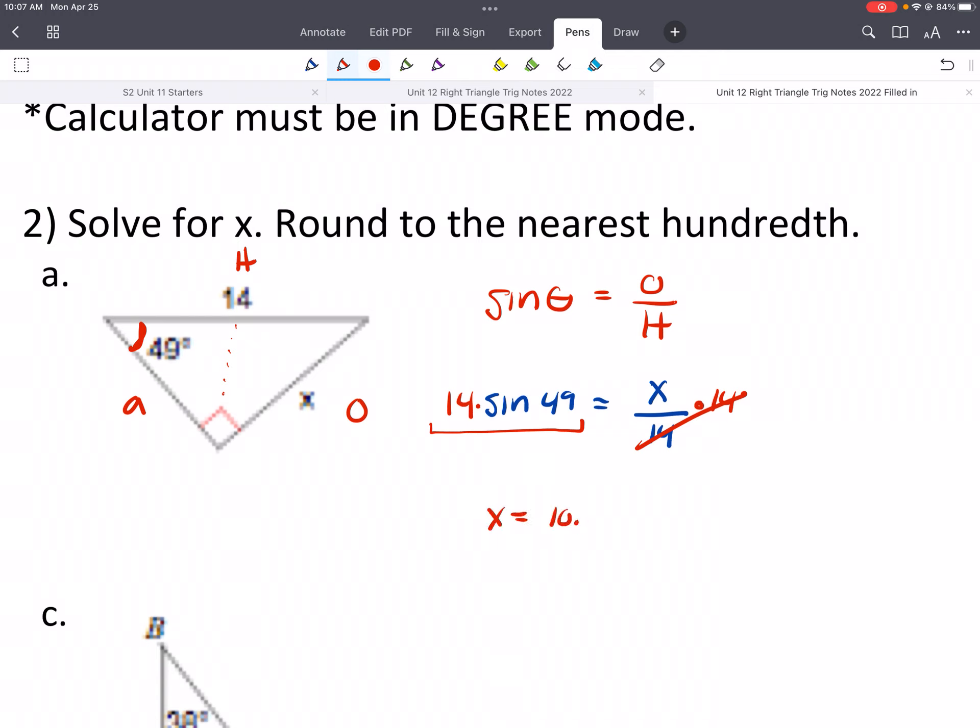And I end up getting that X is 10 point, again, we'll round to one decimal place, we'll go to 0.6. This is not an angle. This is a distance. It'd be like feet or inches or meters if they gave us units.